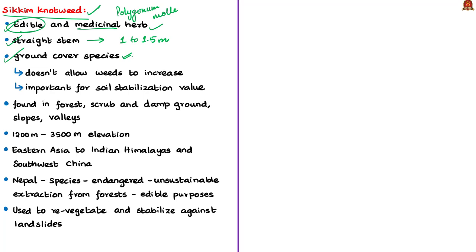It adds nutrients to the soil and does not allow weeds to increase, making this species highly important for its soil stabilization value. The plant is found in forest scrub, damp grounds, slopes and valleys. The species is distributed at an elevation range from 1,200 to 3,500 meters from eastern Asia to the Indian Himalayas and even southwestern China.